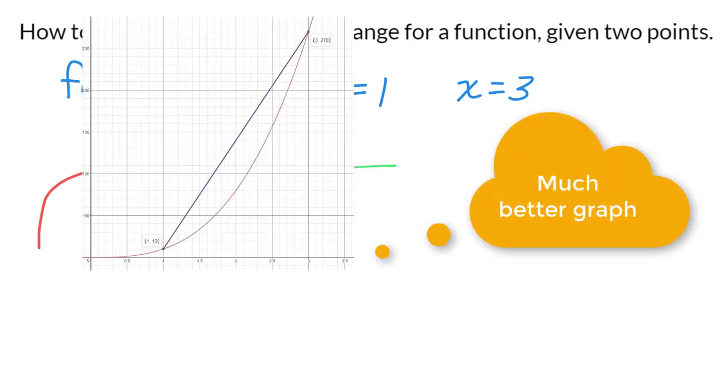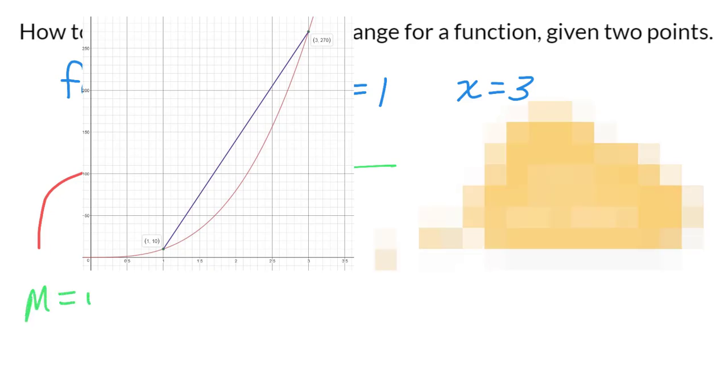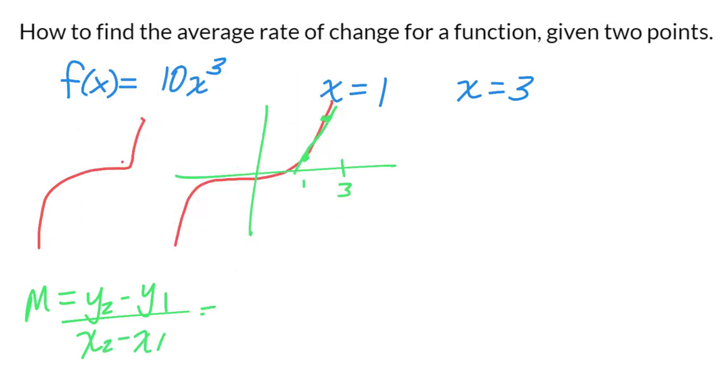To do that, we know the slope formula is y₂ minus y₁ over x₂ minus x₁, but I don't know what y₂ is. Sure you do, those are the values of your function.